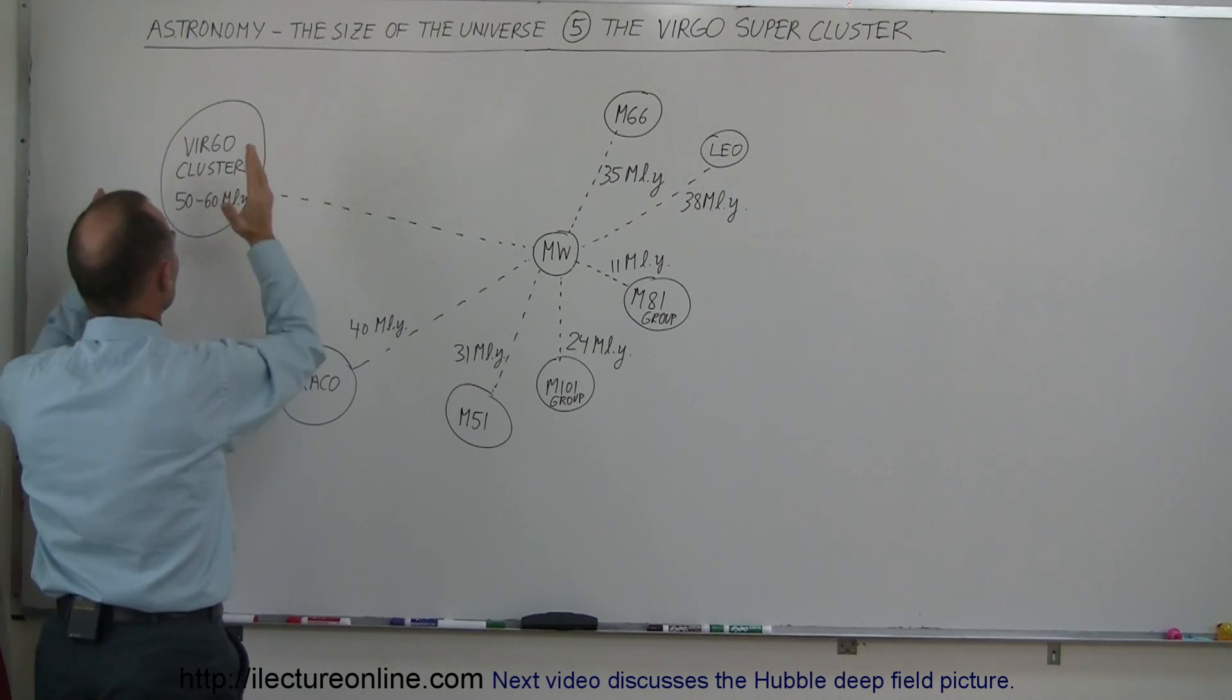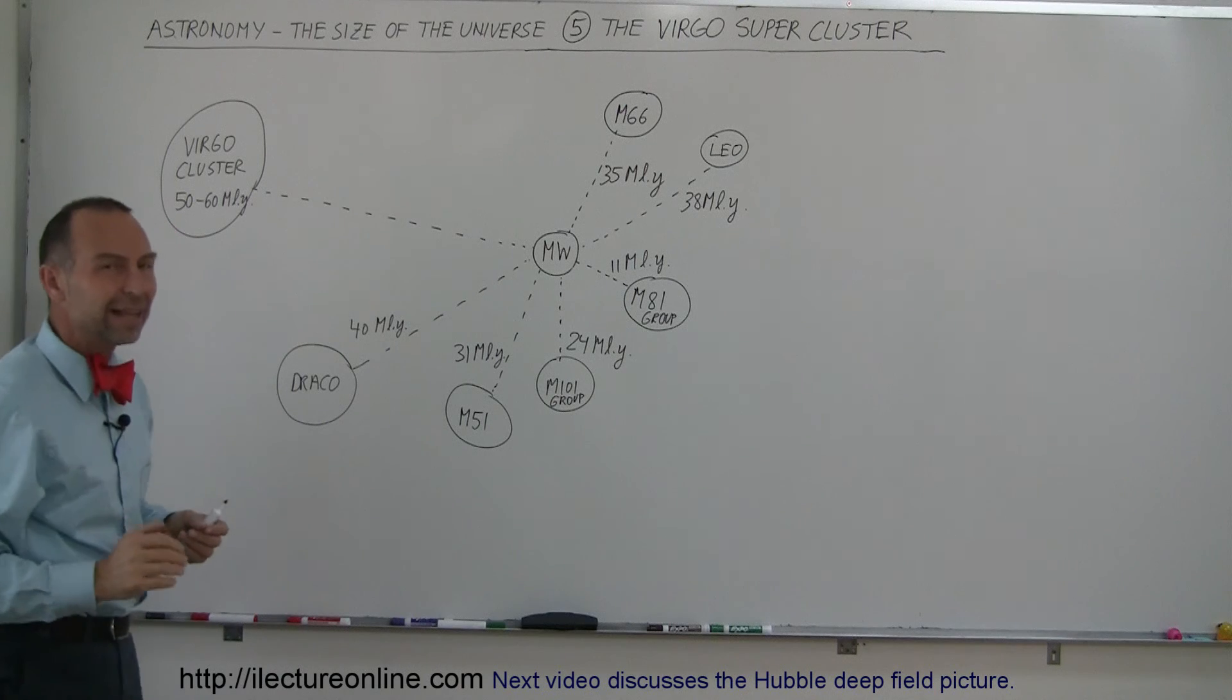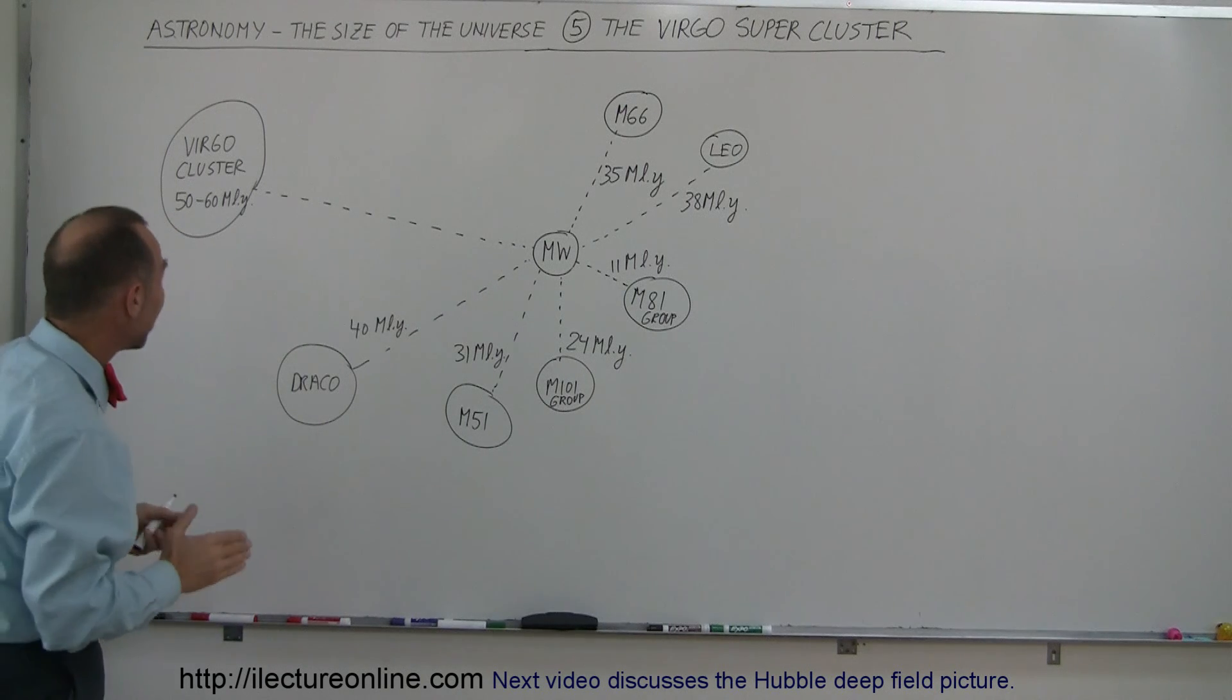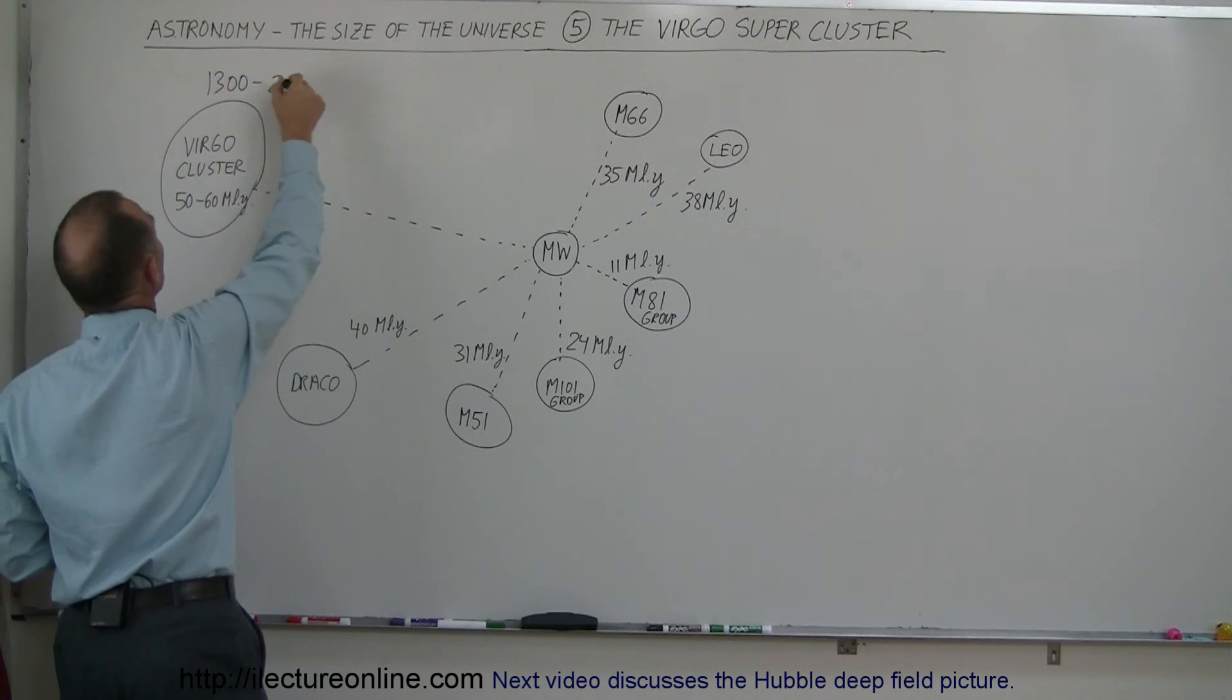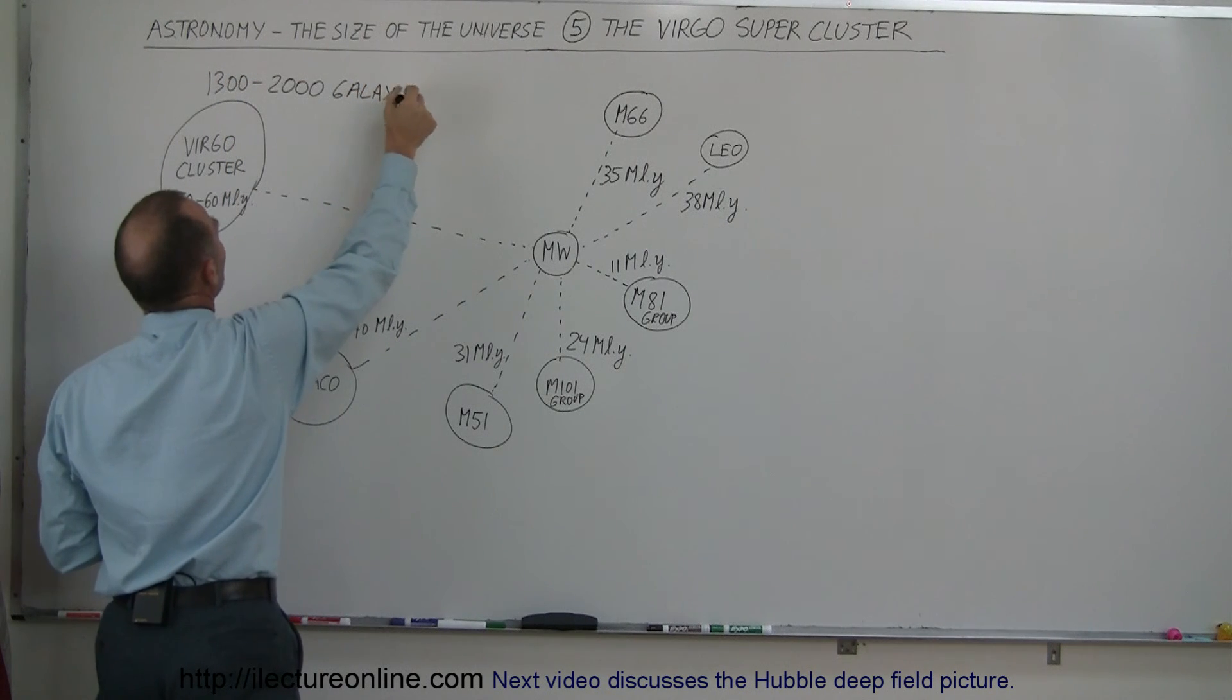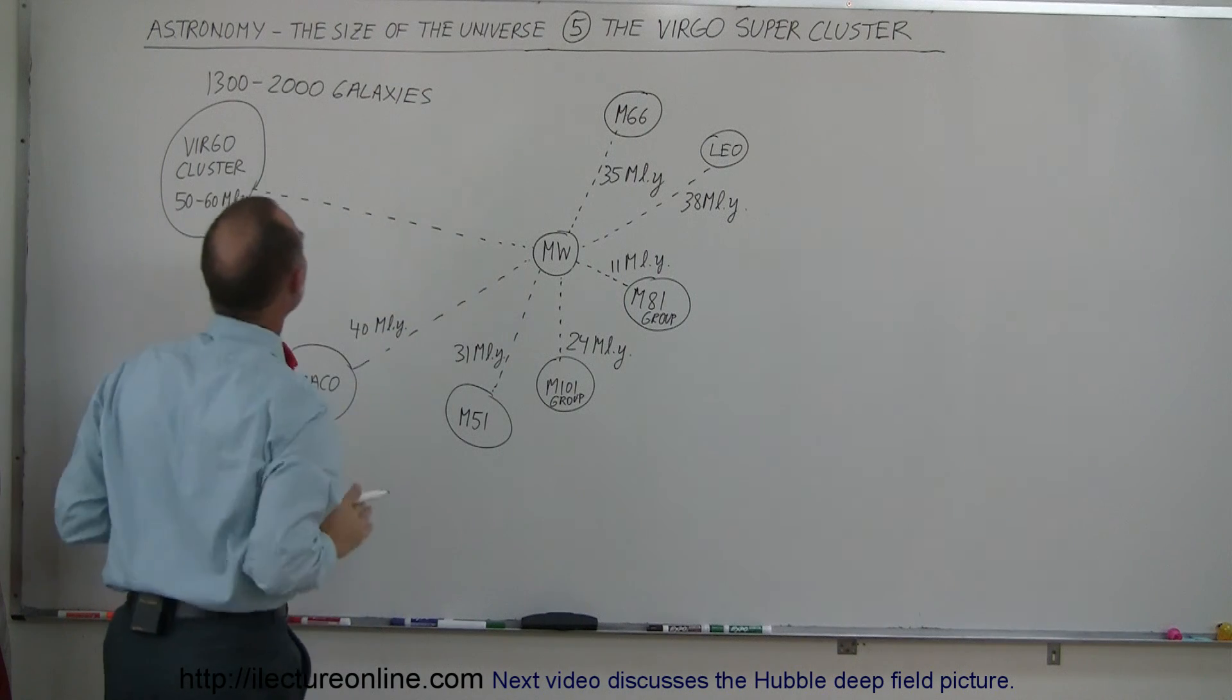Here's a single cluster of galaxies that has between 1,300 and 2,000 galaxies. So many, we can't even count them all yet. Imagine a group of galaxies clustered together with that many galaxies.